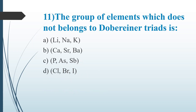Eleventh Question: The group of elements which does NOT belong to Dobereiner's Triads is — Option A: Lithium, Sodium, Potassium. Option B: Calcium, Strontium, Barium. Option C: Phosphorus, Arsenic, Antimony. Option D: Chlorine, Bromine, Iodine. Answer is Option C, Phosphorus, Arsenic, Antimony. Dobereiner's Triads were identified by German scientist Johann Wolfgang Döbereiner — elements grouped by similar properties.